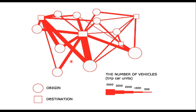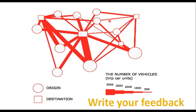The other representation is the desired line diagram. Here, circles represent origins and squares represent destinations. These are joined by lines of different thicknesses based on the number of vehicles. A legend is drawn indicating what each line thickness represents — for example, a thick line may represent 3,000 car trips per unit while thinner lines represent 500 trips. Thank you for watching this video; please do write your feedback.